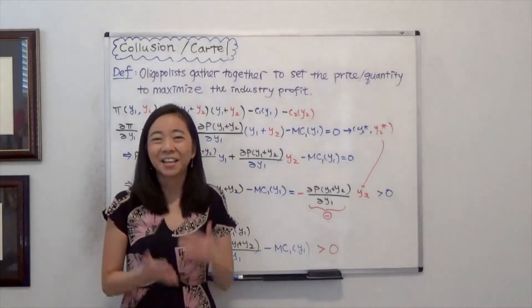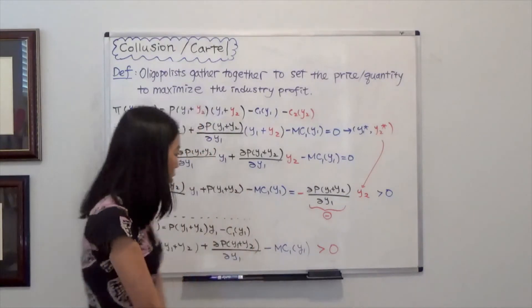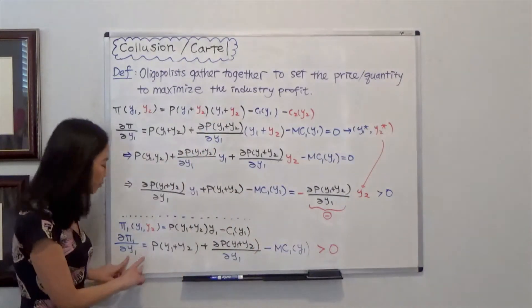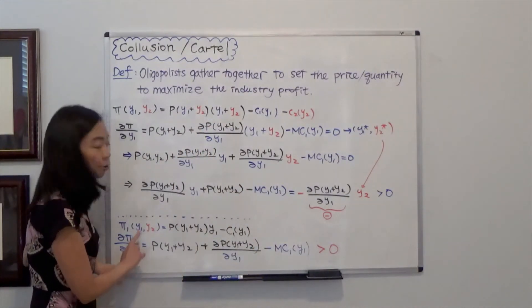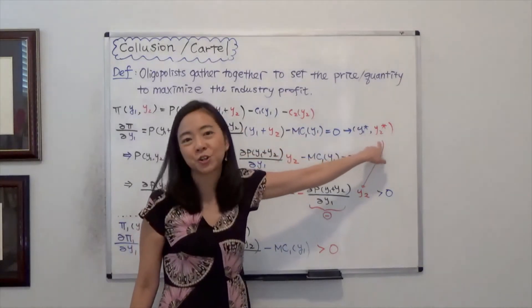What does that mean? That means after we achieve a cartel, firm 1 has an incentive to produce just a little bit more that will increase the profit of firm 1, given that firm 2 sticks to the cartel agreement.